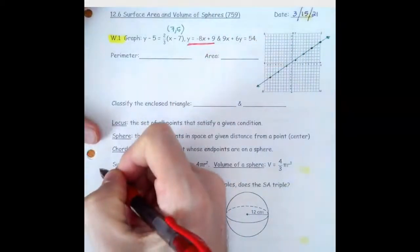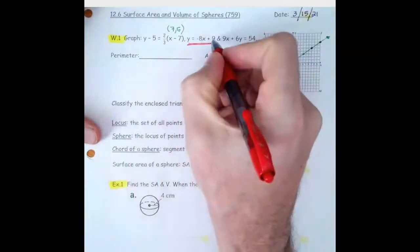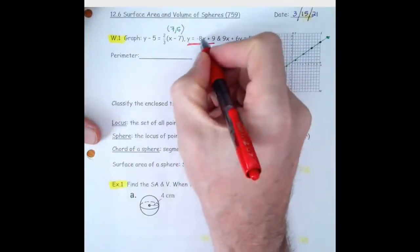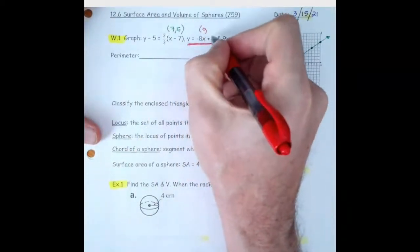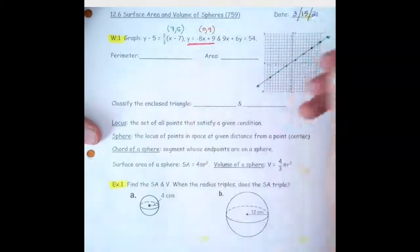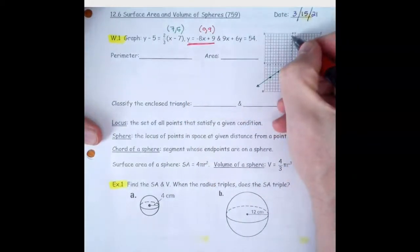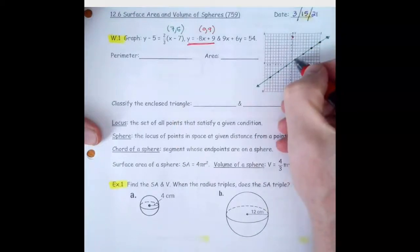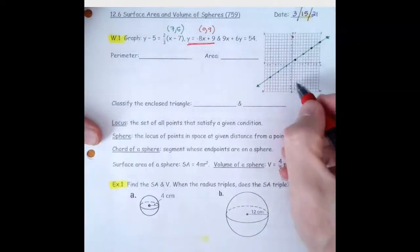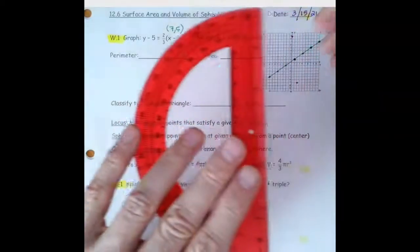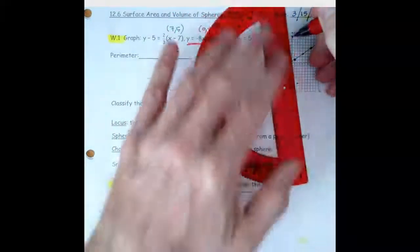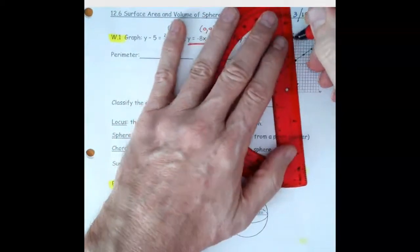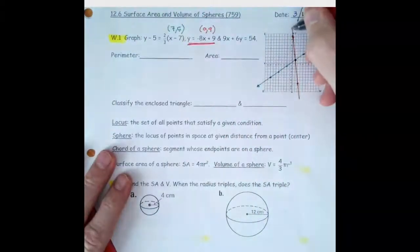So this next one is in slope-intercept form. If we plug 0 in for x, then y would be 9. So we have the point (0, 9) up here. The slope of that one is negative 8, so we're going to go down 8 over 1 to the right.